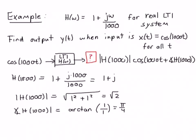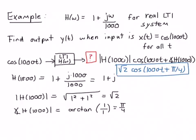So now we have our final answer. We can easily write our final answer. I'll write it up here. So we'll just fill it in. It'll be √2 cos(1000t + π/4). That is our final answer for the output signal y(t) of this system.